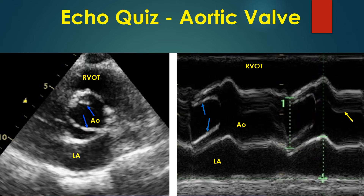The vertical axis on M-Mode is distance from the transducer. The horizontal axis is time — that is how it was called time motion mode, which was later shortened as M-Mode. Aortic leaflets in open position are marked by blue arrows. The aortic valve closure line is marked by the yellow arrow.